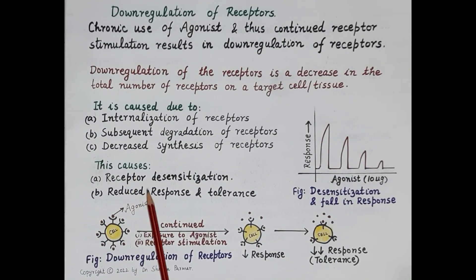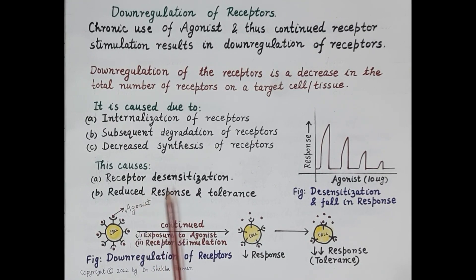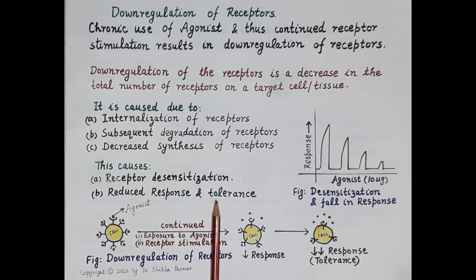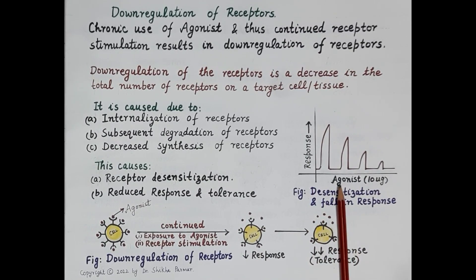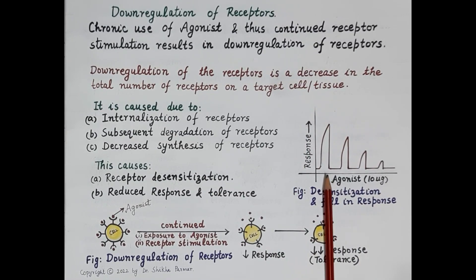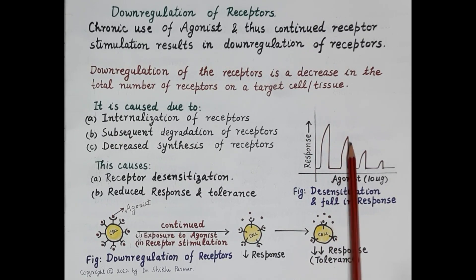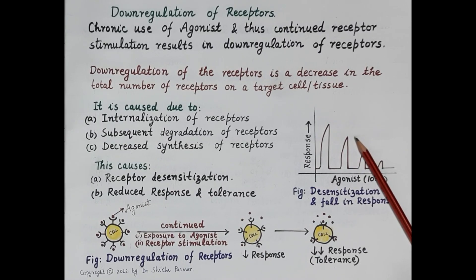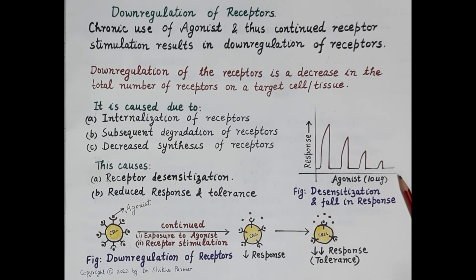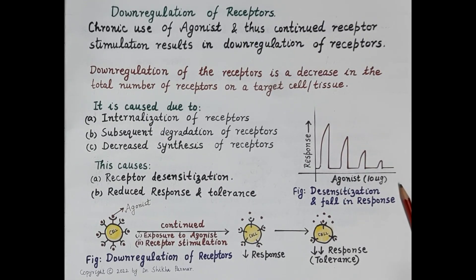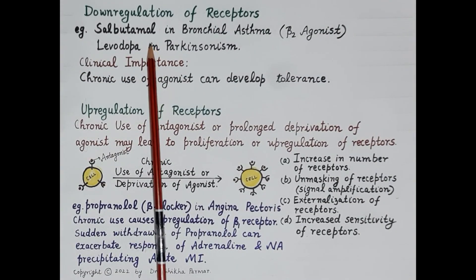Down regulation leads to reduced sensitivity of receptors to the agonist — that is receptor desensitization — and a gradual fall in the pharmacological response, resulting in drug tolerance. This figure shows desensitization: on the x-axis is the constant dose of agonist (10 micrograms) and on the y-axis is the response. Initially 10 micrograms produces a high response, but over time with continued use, the response progressively reduces.